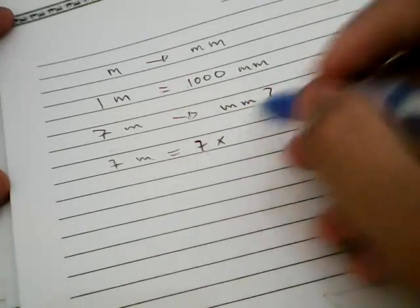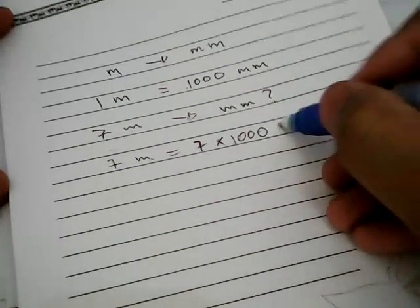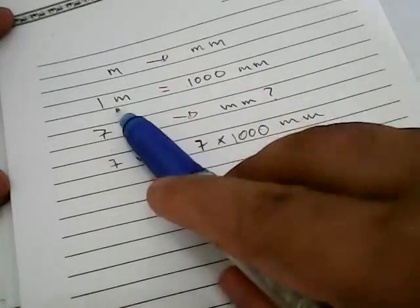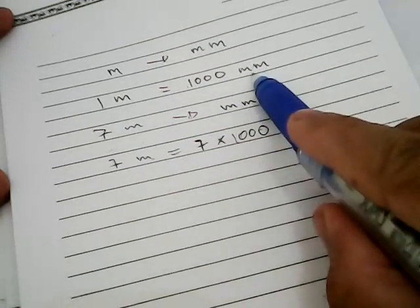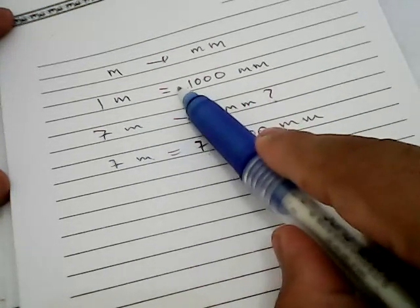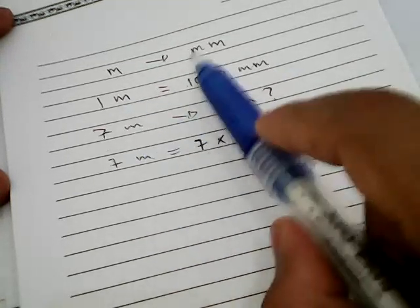Well, why we multiply the 7 with 1000? Because we want to convert meter to millimeter, so anything in front of this meters we need to multiply it with 1000. Actually, one meter is equal to 1 multiplied by 1000.